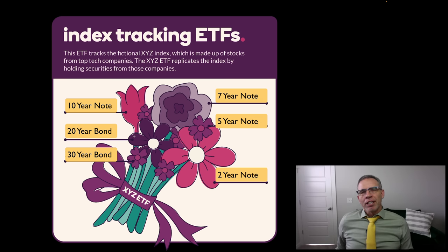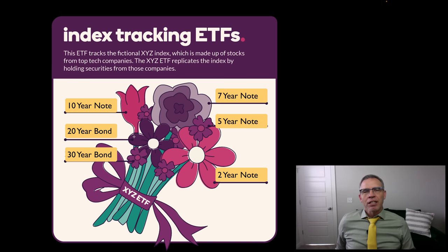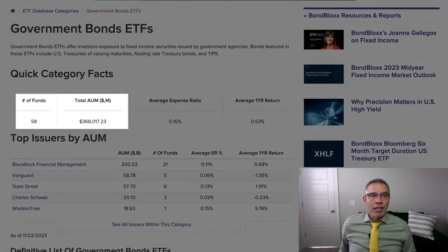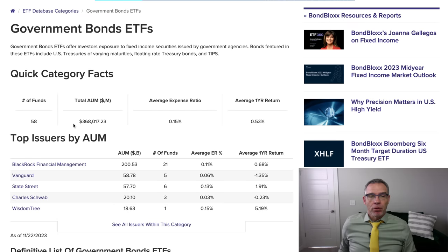Think of a bond ETF, particularly a government bond ETF, as a bouquet of individual different government bonds. I'll show you how that works in a little bit. It's a simplistic example, but I think it emphasizes the point. There are a number of different government bond ETFs that you can purchase. In fact, according to the ETF database website, there are 58 different U.S. government bond ETFs that one can purchase.